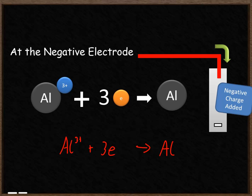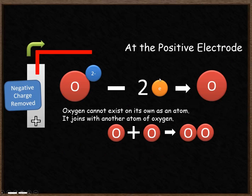We'll have a look at what happens at the positive electrode now. It's slightly more complicated. Your negative oxygen is attracted to it. It's got two extra electrons, so it loses those minus two electrons to become just an atom of oxygen. But oxygen can't exist on its own, so it joins onto another atom of oxygen to become O2.